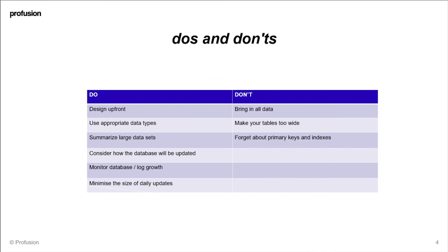Finally, I recommend that you minimize the size of daily updates. If possible, look to only get delta changes — only records that have changed since the day before, for example. This is obviously much more efficient than re-updating every single record across the board.